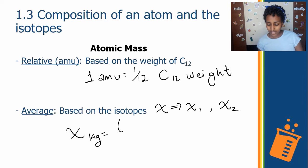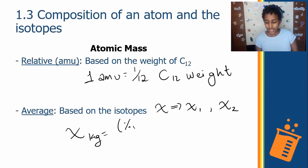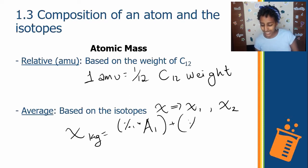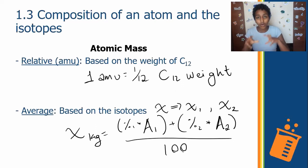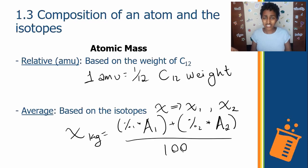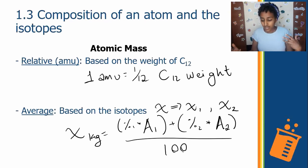The formula: take the percentage of isotope 1 multiplied by its mass number, add the percentage of isotope 2 multiplied by its mass number, and divide by 100 to get the average weight. Understand what this formula is saying: different isotopes exist in different abundances. For example, isotope X1 could be 99% abundant.